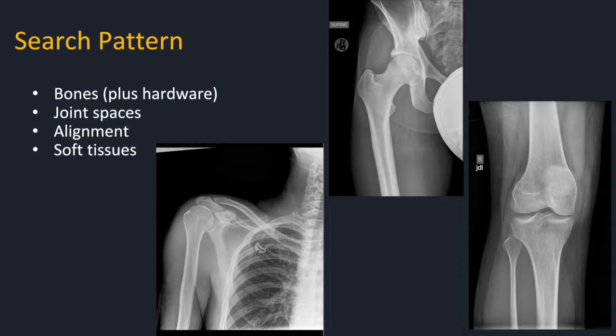For example, in the shoulder, I would say: no fracture or osseous-destructive lesion. Glenohumeral and acromioclavicular joint spaces and alignment are normal, visualized lungs are clear, no focal soft tissue swelling. For the hip, it's the same: no fracture or osseous-destructive lesion, hip joint space and alignment is normal, right sacroiliac joint is normal, no focal soft tissue swelling.